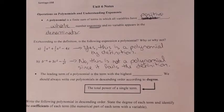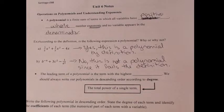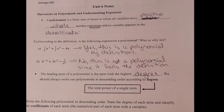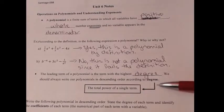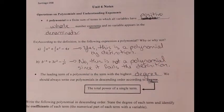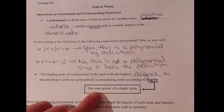Next we're going to talk about classifying polynomials. The leading term of a polynomial is the term with the highest degree. We should always write our polynomials in descending order according to degree. The degree of a term is the total power of that term — when you see 'total,' that implies a sum.